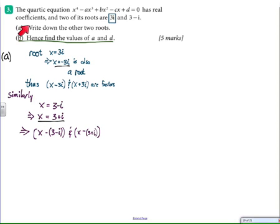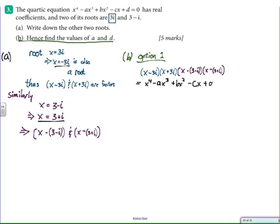If x equals negative 3i is also a root, then x plus 3i and x minus 3i are factors of that polynomial. Similarly, if 3 minus i is one of the solutions, then 3 plus i is another root. And then setting it equal to this expression.